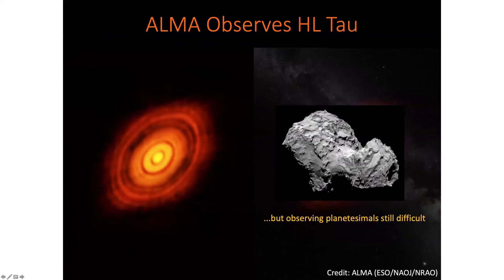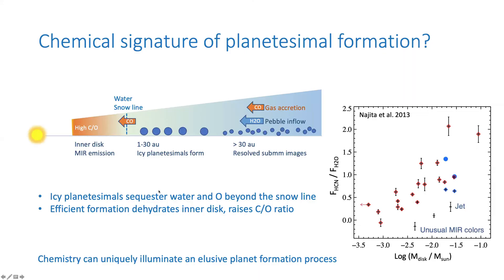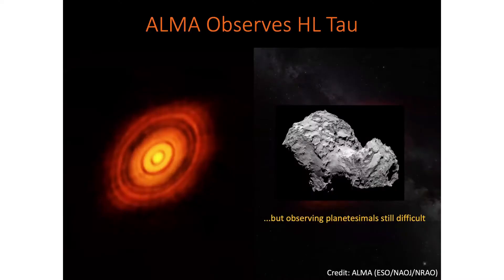Chemistry can potentially uniquely illuminate what would otherwise be a very elusive planet formation process. When we look at disk images, we can use structures to tell us whether planets are forming. But if we want to know how they're forming — whether by planetesimals and core accretion — images can't really tell us that. That's where chemistry might come in, providing new insights. So keep chemistry in mind as a potential tool in your own work.